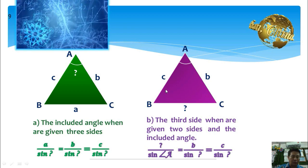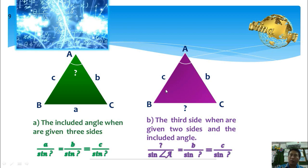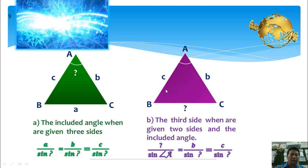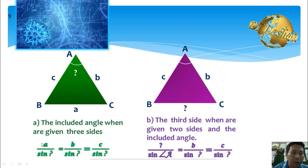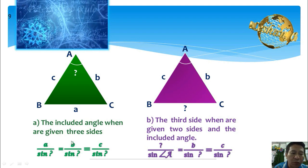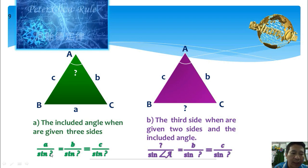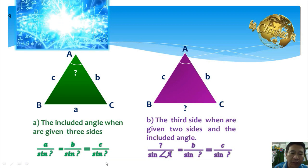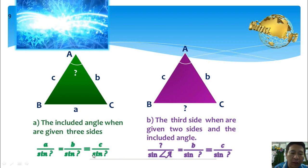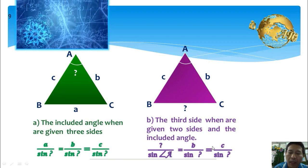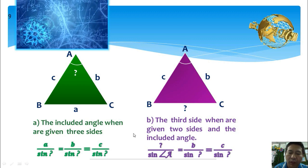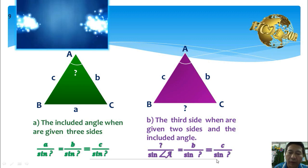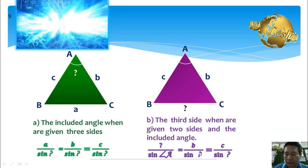As we know, an equation with two unknowns cannot be solved. If we use the sine rule, we face two unknowns in each form of the equation — whether using side a, b, or c — we are always facing two unknowns.